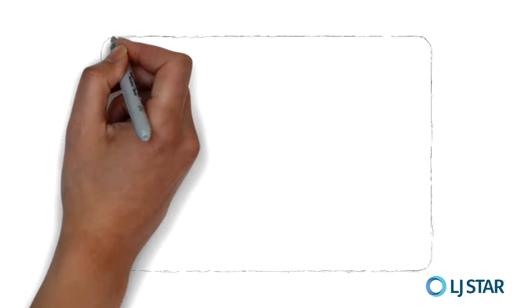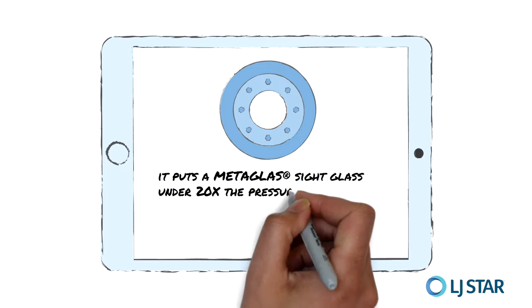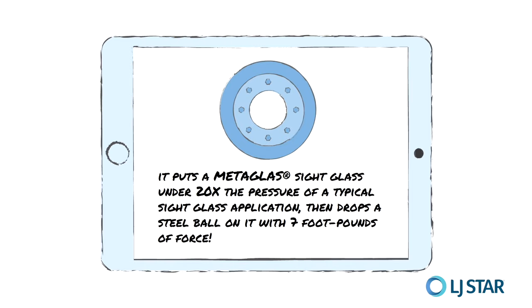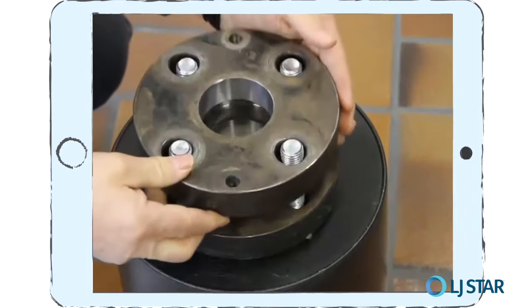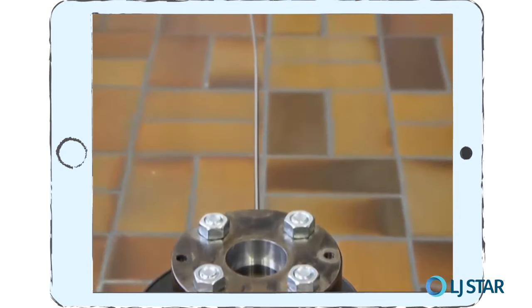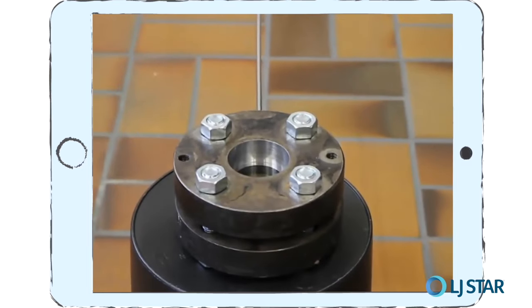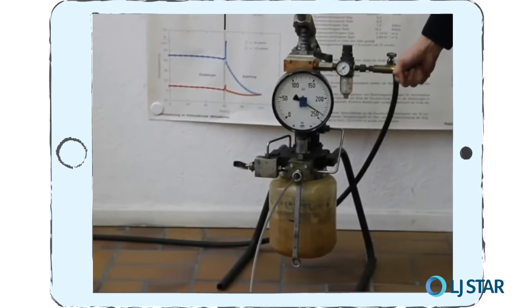Let's cover impact tolerance. Some of these processes demand the very best performance from your sight glass. Watch this test lab video — it puts a Metaglass sight glass under 20 times the pressure of a typical sight glass application, then drops a steel ball on it with seven foot-pounds of force. A seal gasket and Metaglass sight glass are positioned onto the base flange; a metal retaining ring and bolts hold it in place. A pneumatic pump connected via high-pressure tube increases pressure to 870 psi, then to 3,300 psi.